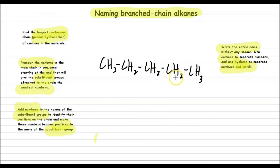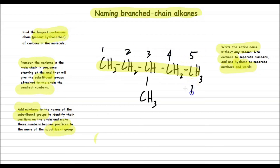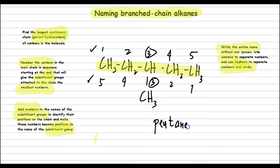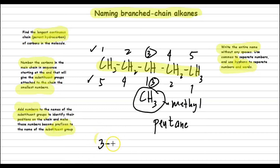How about this example? This is the longest chain. Both left-to-right and right-to-left sequences give number 3 for the branch, so either direction is correct. The name of the parent hydrocarbon is pentane, and our substituent is methyl. Therefore, the name of this alkane is 3-methylpentane.